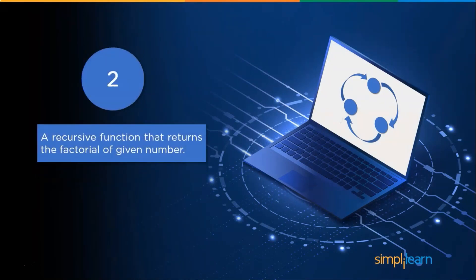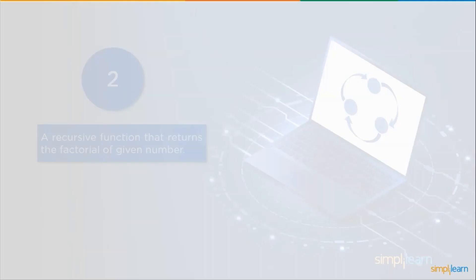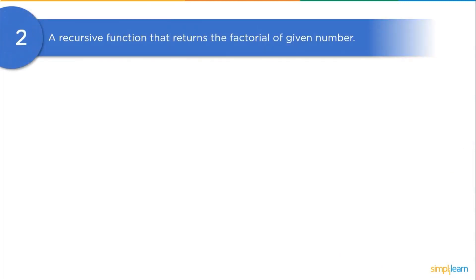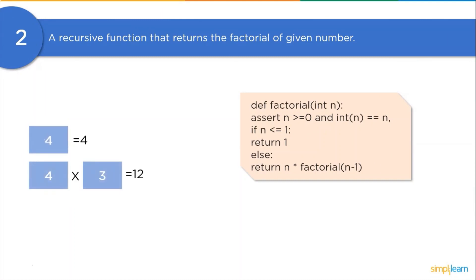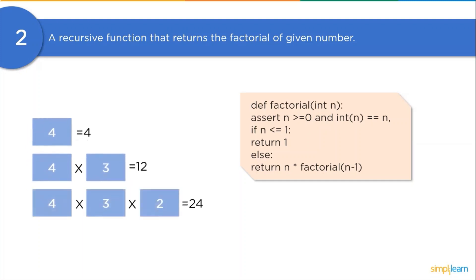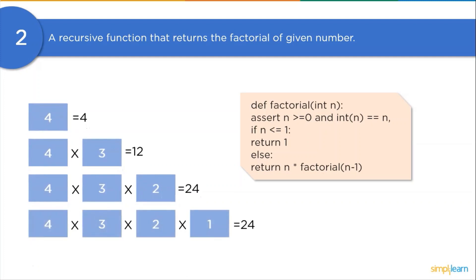Now let's move on to our next question. We will discuss a recursive function to find the factorial of a given number. We will start with creating a function fact. In the function definition, we will first check if the given number is less than or equal to 1, then return 1. Else, we will return the multiplication of that number with the recursive fact function called with n-1 as an argument.